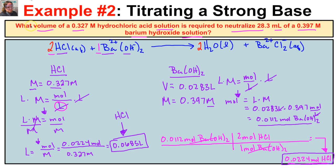We just figured out the volume of HCl needed to titrate 28.3 mL of 0.397 molar barium hydroxide solution. That's titration! If you found this helpful, click the subscribe button in the bottom right corner and feel free to leave any comments or questions below.